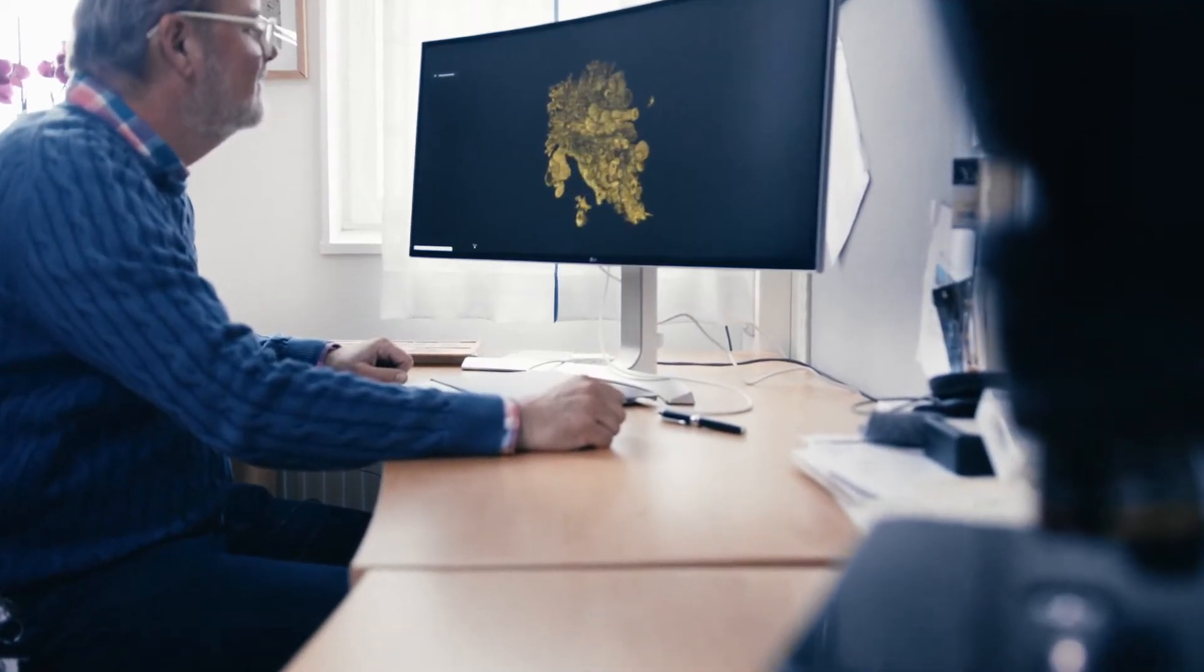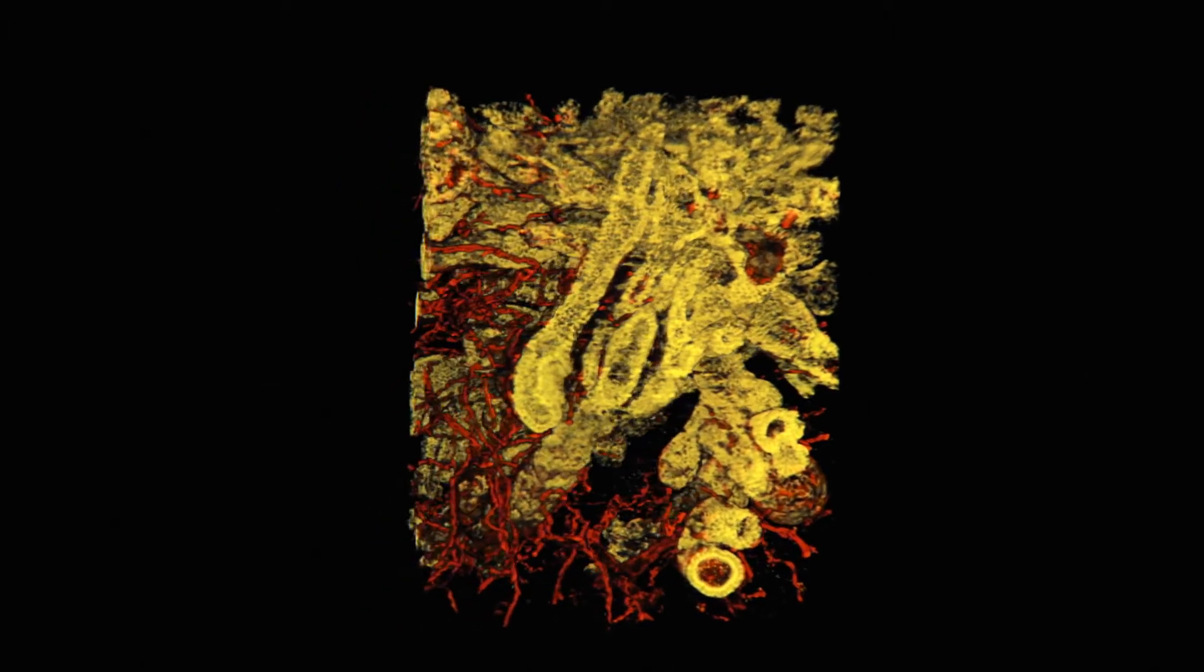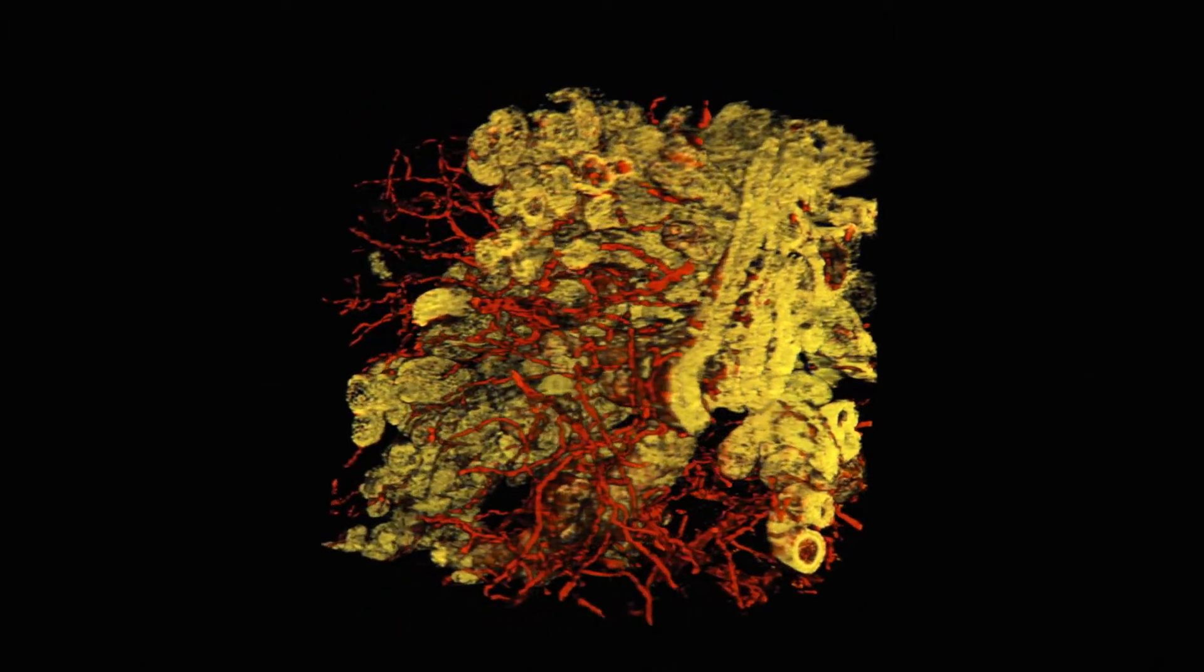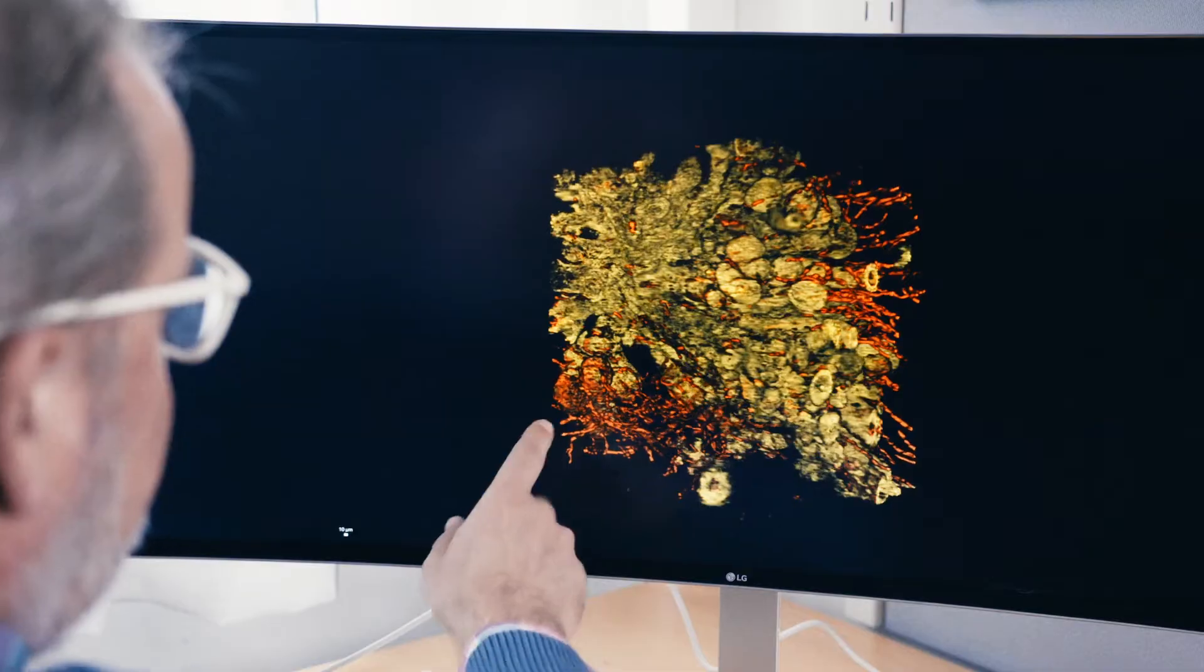The most common form of breast cancer starts in the ducts. Here we see the ducts with cancer in situ combined with the surrounding blood vessels.